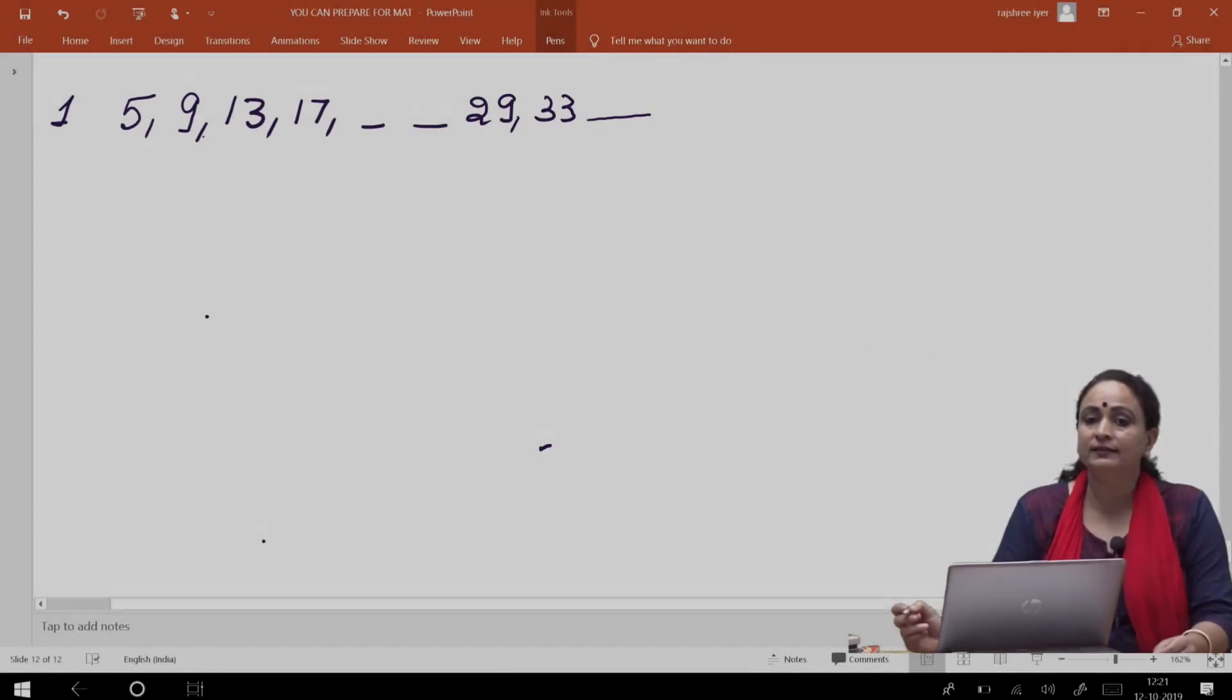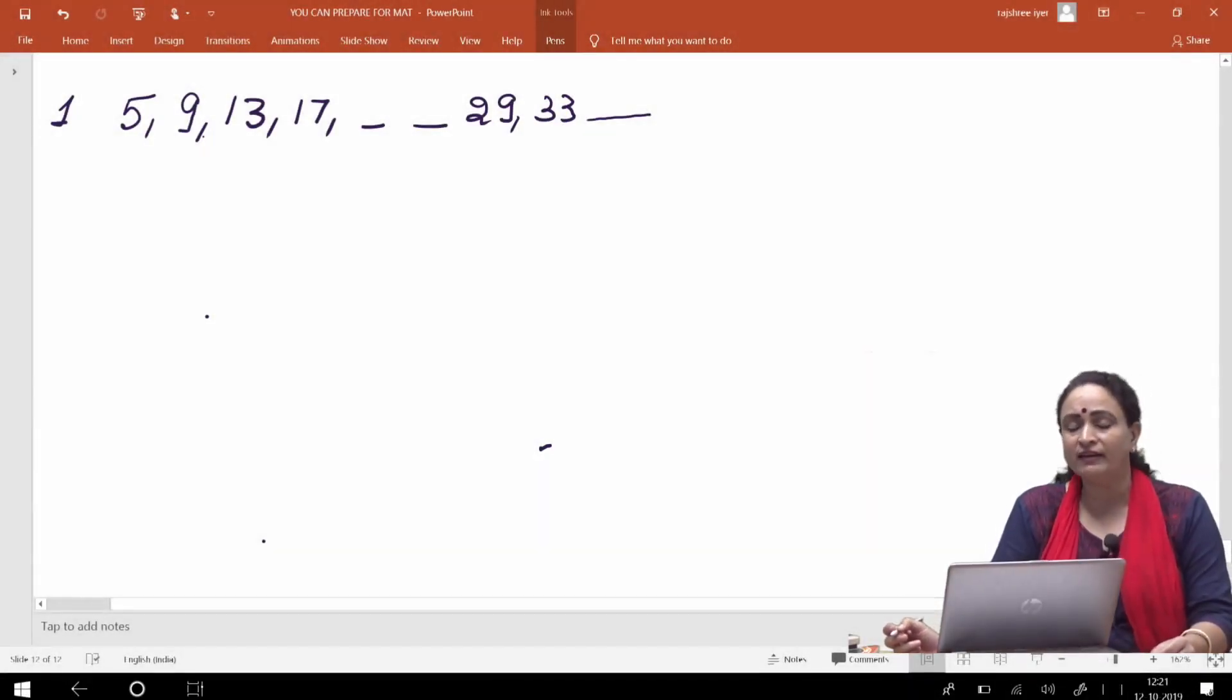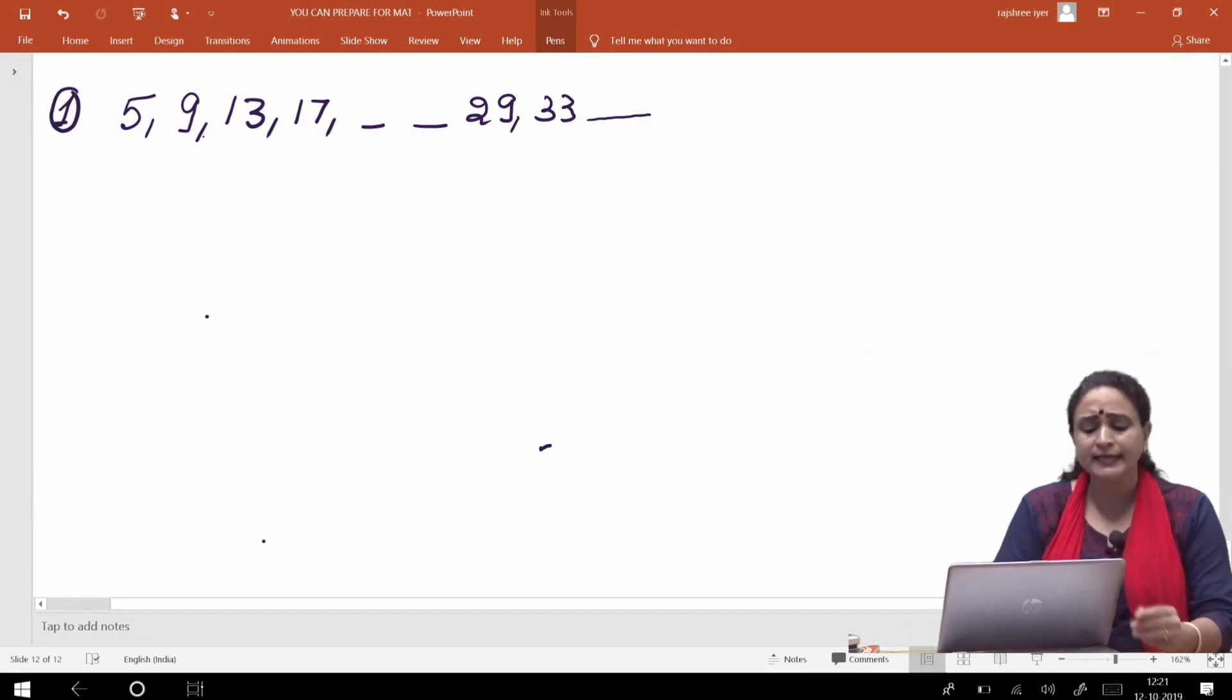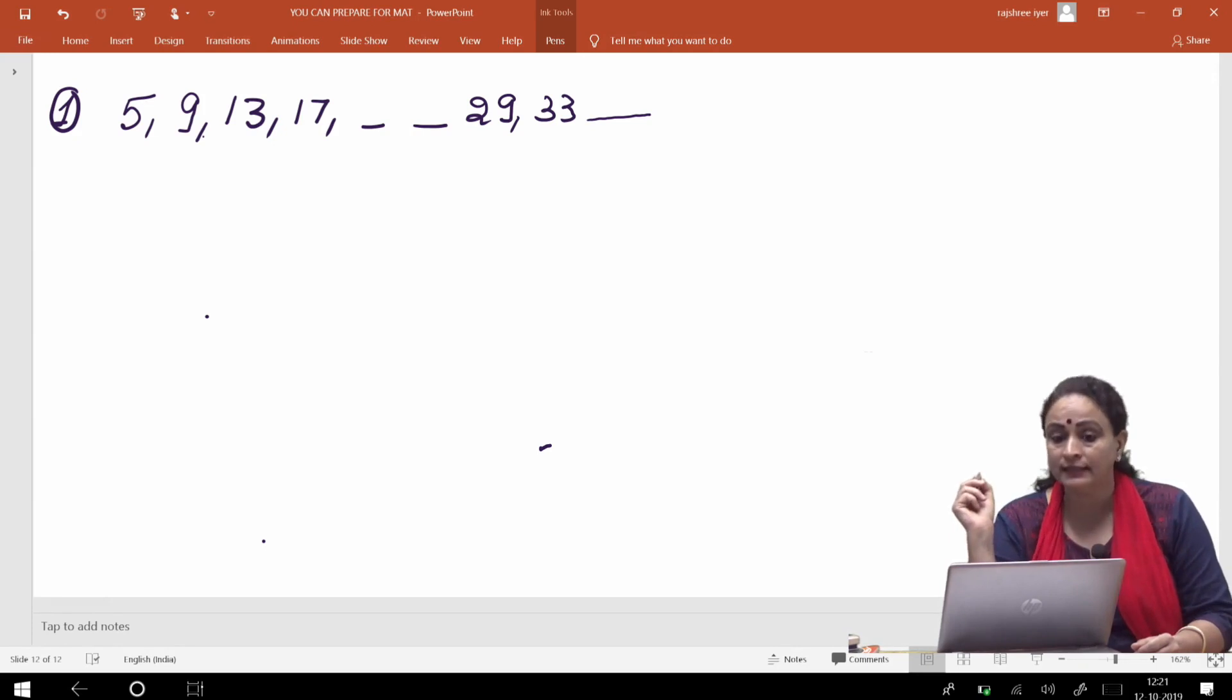Let us now start with the number series questions. The very first question - I have taken a series of numbers which says that it's 5, then the next number is 9, 13, 17, then you have got dash, 29 and then 33 and then again a dash. Now you have to fill in the blanks of the series of the numbers. Now look at the series very carefully.